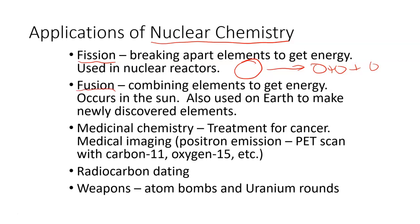Fusion involves combining elements to get energy. This is what people would love to be able to do in nuclear reactors, but they aren't able to do that yet. The big example we see is in the sun, which combines hydrogen to make helium. So you combine elements to create bigger elements — hydrogen and hydrogen combine together to create helium nuclei, or even bigger nuclei.